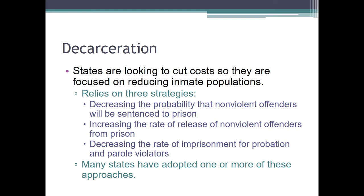Three de-incarceration strategies: first, get nonviolent offenders out — increasing the rate of release for nonviolent offenders into probation and parole rather than incarceration. Second, decrease rates of imprisonment for probation and parole violations. In 2011, North Carolina tried to limit the continuing cycle of incarceration for failing probation and parole. Many states have adopted one or more of these strategies. North Carolina's biggest move was the Justice Reinvestment Act of 2011.